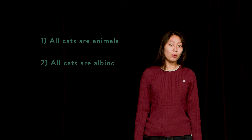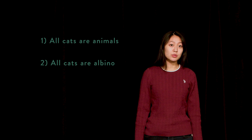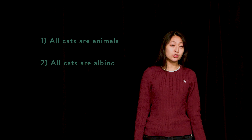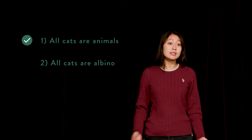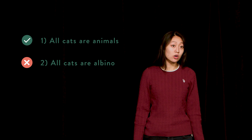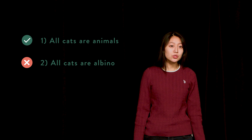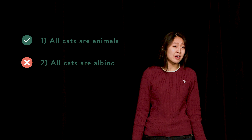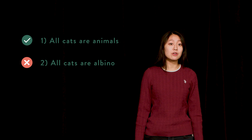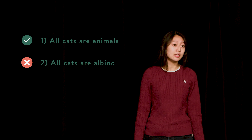However, there is an important distinction between these propositions. The first is true, whereas the second is false. One is true because all cats are, in fact, animals. But two is false because albino cats are actually quite rare. We can see from two that an affirmative statement is not the same thing as a true statement.